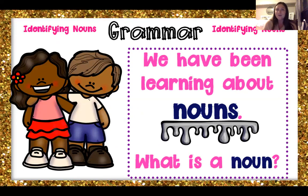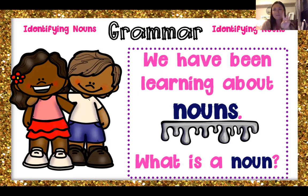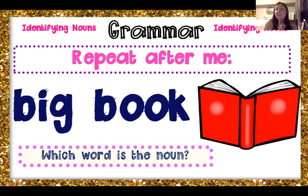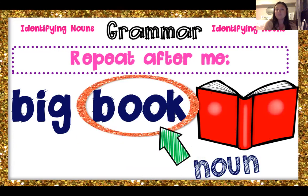So the first thing we're going to do is identify common and proper nouns. We've been learning about nouns a lot in second grade. What is a noun? A noun can be a person, a place, or a thing. Great job. So a noun is a part of speech that names a person, a place, or a thing. Repeat after me: big book. Which word is the noun? Great job if you said book — book is a thing, so that makes it the noun.